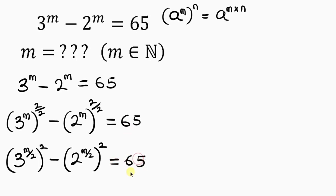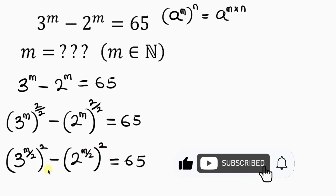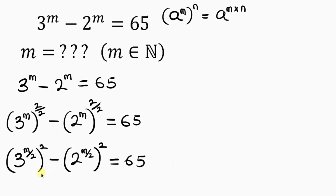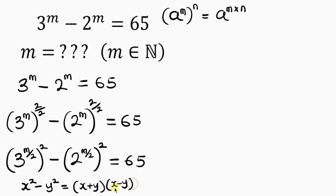Now ask yourself: do I have the difference of two squares? Yes, because this value is squared and this other value is squared, and I have a difference between them. To express difference of two squares: x squared minus y squared can be expressed as (x + y)(x − y). So we're going to express this expression in that form.